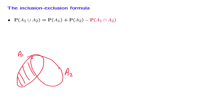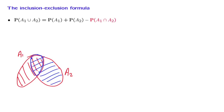We take the probability of the first set and add to it the probability of the second set. But then we realize that by doing so, we have double-counted part of the diagram. And so we need to correct for that by subtracting the probability of this intersection. And that's how this formula comes about.